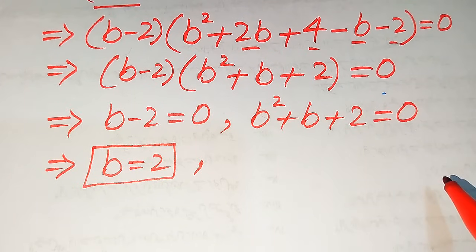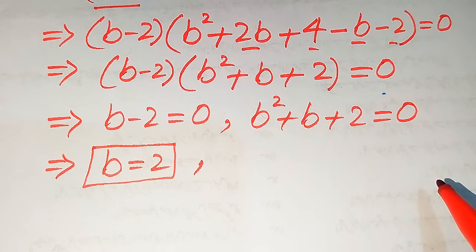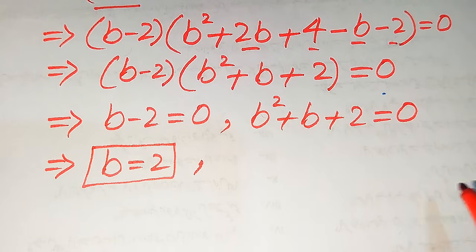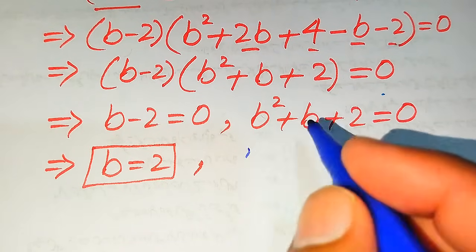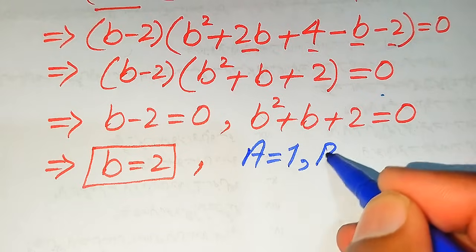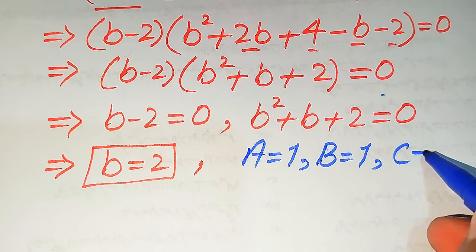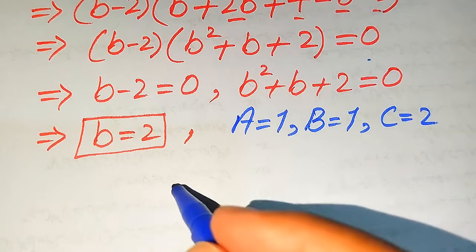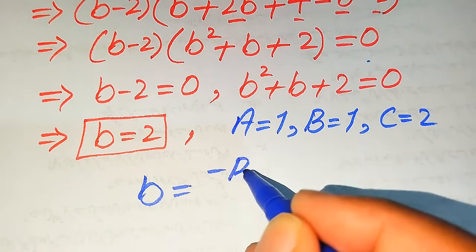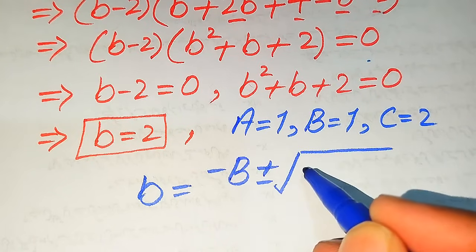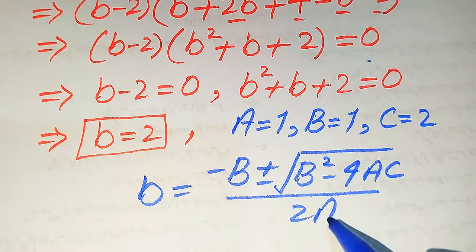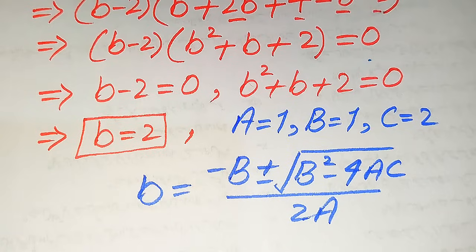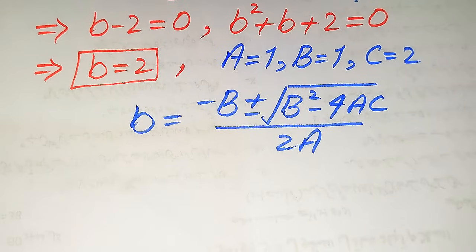There are three methods to solve a quadratic equation: applying the quadratic formula, completing the square, and factorization. Here we use the quadratic formula. The coefficients of the equation b squared plus b plus 2 equals 0 are: capital A equals 1, capital B equals 1, and capital C equals 2. The quadratic formula is b equals minus B plus or minus the square root of B squared minus 4AC, divided by 2A.